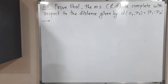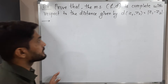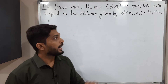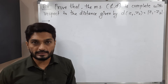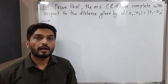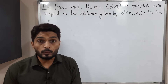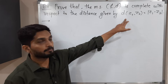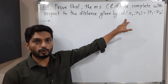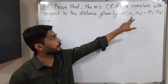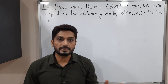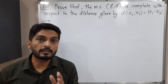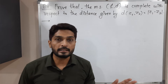Hi everyone. In this video we are going to discuss this example. We have ℂ, the set of complex numbers, and we have to prove that it is a complete metric space with the metric D(z₁, z₂) = |z₁ - z₂|.